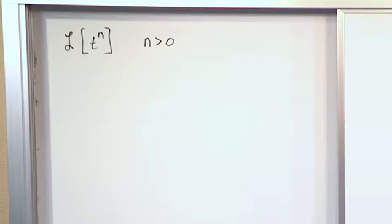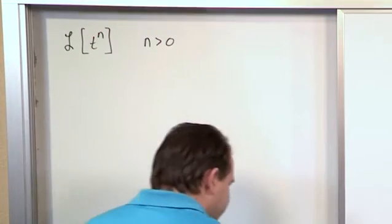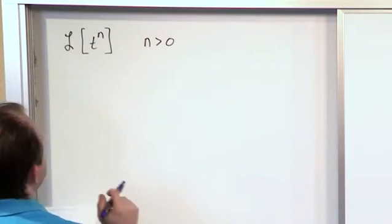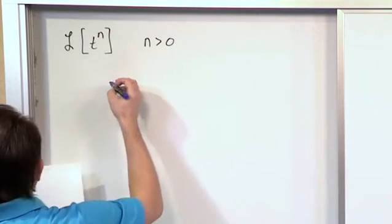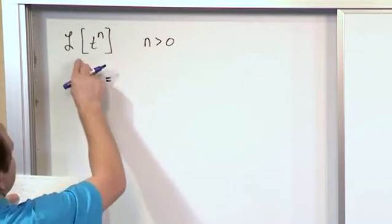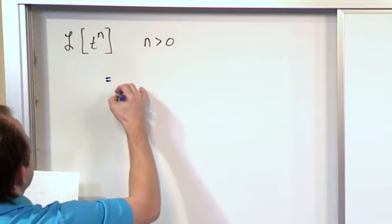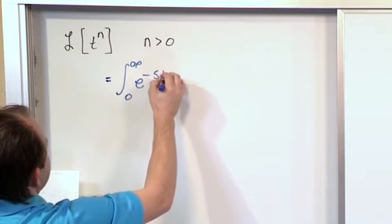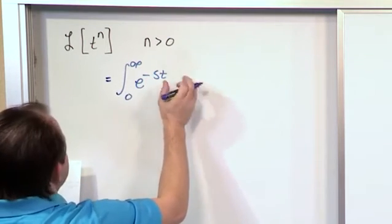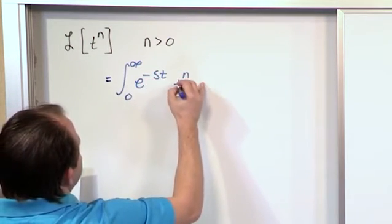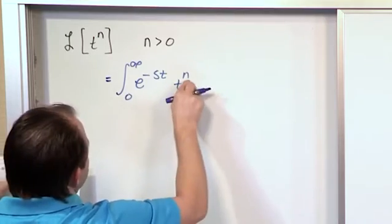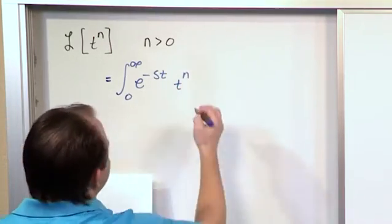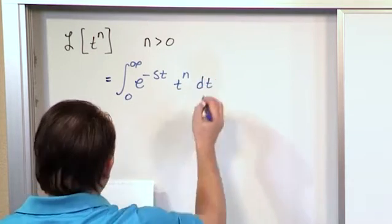So what we want to do is really just apply the definition of what Laplace Transform really is. So what we're going to have here is this Laplace Transform is going to equal the integral from zero to infinity, e to the minus s times t. Then we have to put in our function. In this case it's t to the power of n, which we don't know what n is. It could be t to the fifth, t to the sixth, whatever. And we're integrating, of course, over time.